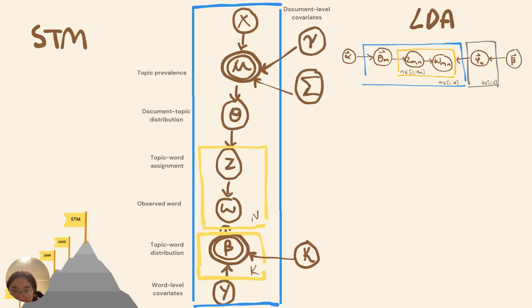However, STM advances from LDA's foundation, addressing its shortcomings. Instead of fixed topic proportions per document, STM models these, referred to as theta, using logistic normal regression,